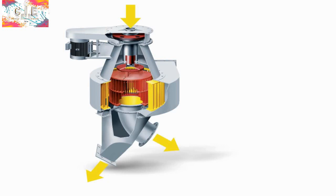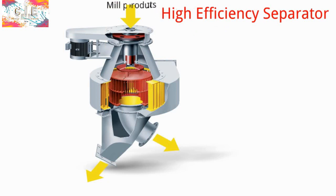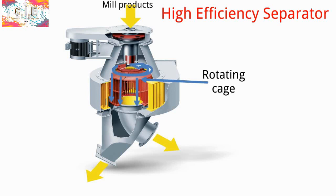The third kind is high efficiency separator. In this kind, the feed enters from the top on rotating cage which disperses the feed and then makes it flow down.